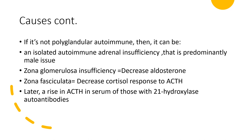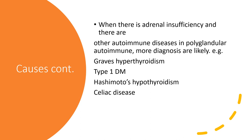Still on causes: when there is adrenal insufficiency and there are other autoimmune diseases — that is, a polyglandular autoimmune situation — we are likely going to be battling with more diagnoses at the same time we are dealing with adrenal insufficiency. For example, an individual diagnosed with Addison's disease could have hypothyroidism, could have Graves' disease, and could also have type 1 diabetes mellitus. Thyroid function testing might reveal not hypothyroidism but Hashimoto's thyroiditis. The individual could also have gastrointestinal problems secondary to celiac disease. As I've said in many presentations, when you have one autoimmune disease, be expectant and look out for other possible autoimmune diseases.